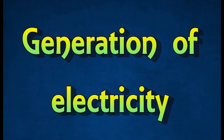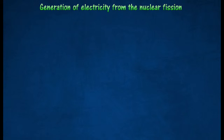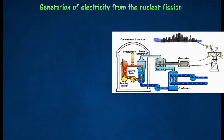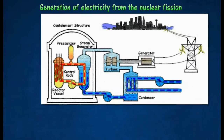Generation of electricity from nuclear fission. In a nuclear power plant, fission in a nuclear reactor provides energy to generate steam to drive a turbine. The turbine in turn drives a generator to produce electricity.